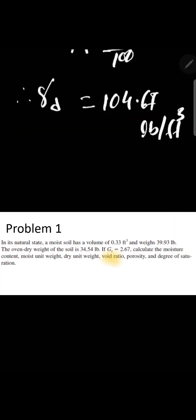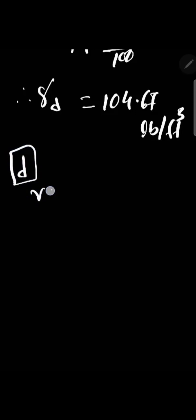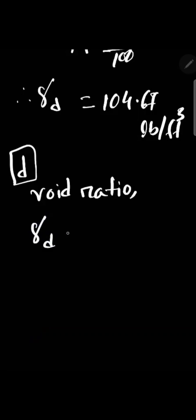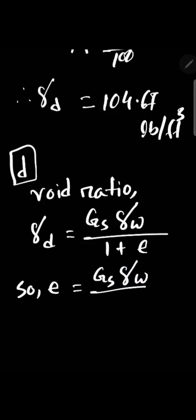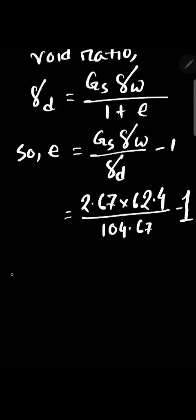Next, we calculate the void ratio. We know dry unit weight equals specific gravity times unit weight of water divided by 1 plus void ratio. So void ratio equals specific gravity times unit weight divided by dry unit weight, minus 1. The void ratio is 1.5918.